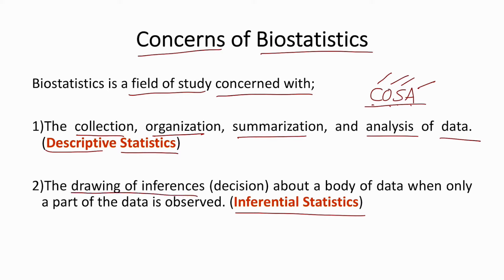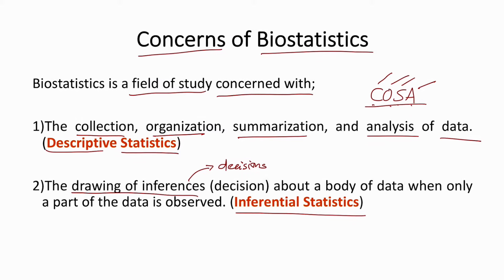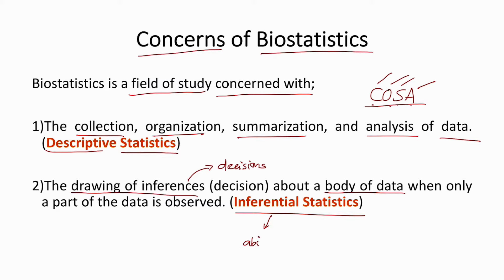The other form of statistics is called inferential statistics, where we draw inferences — meaning we make decisions using statistical data about a body of data. The ability to make decisions from data is called inferential statistics. So biostatistics can be differentiated into two parts: descriptive statistics and inferential statistics.